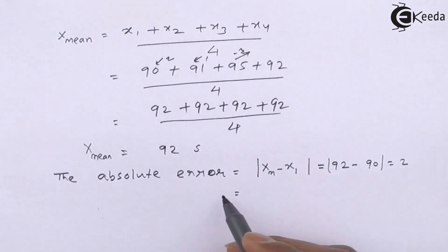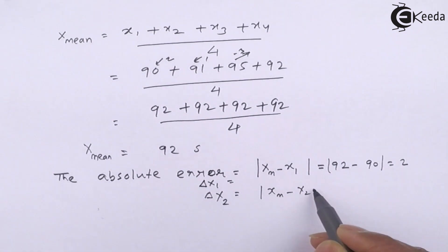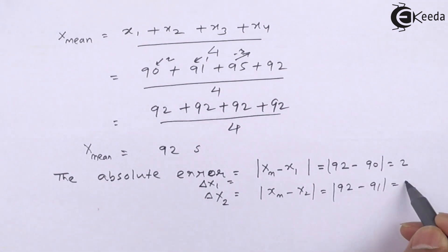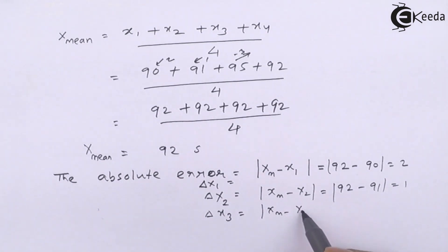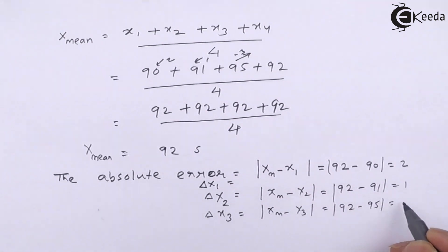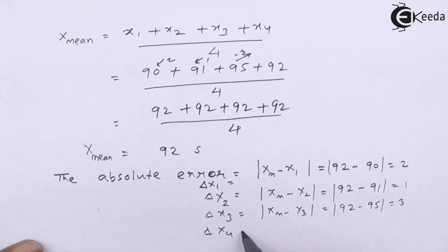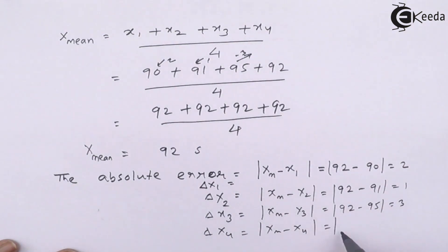The second absolute error, this is delta X1. I will call this as delta X1. In the next reading, this is delta X2, which is Xm minus X2, which is 92 minus 91. So it is 1. Then delta X3, in the third of the observations, the error introduces Xm minus X3, which is 92 minus 95, which is 3. And the last one is Xm minus X4, which is 92 minus 92, which is 0.